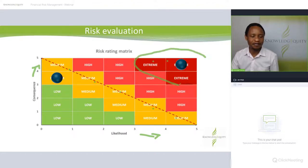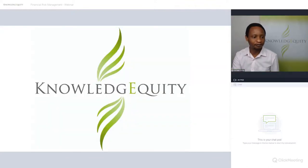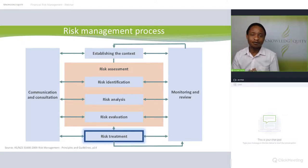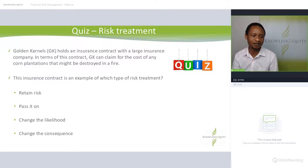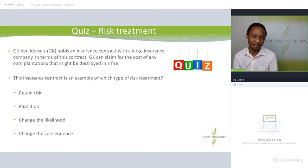Let's now look at risk treatment — putting mechanisms in place to manage or mitigate risk. Continuing with the Golden Kernel example: GK holds an insurance contract with a large insurance company. Under this contract, GK can claim for the cost of any corn plantations destroyed by fire. What type of risk treatment is this insurance contract an example of?